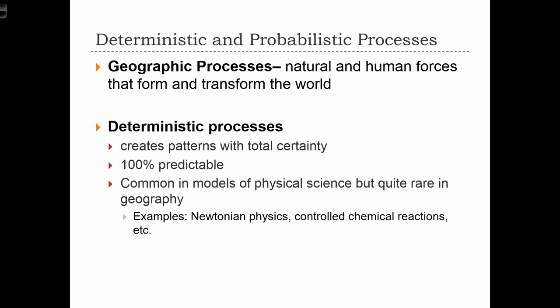Given the motion of an object and the knowledge of all the forces acting on the object, Newtonian physics is a deterministic process because we know exactly how that object will behave in space. Such processes are extremely rare in reality, but it's important to be able to contrast the random and stochastic processes we're going to introduce to these deterministic ones.